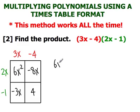Take all of the terms in the boxes and write it out. 6x squared minus 8x minus 3x plus 4.